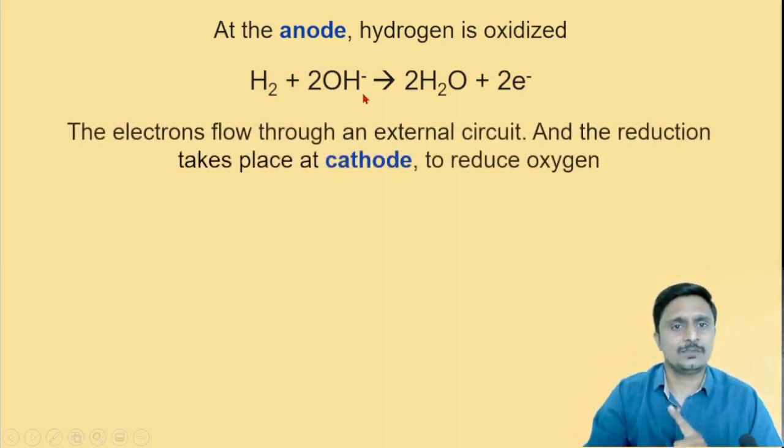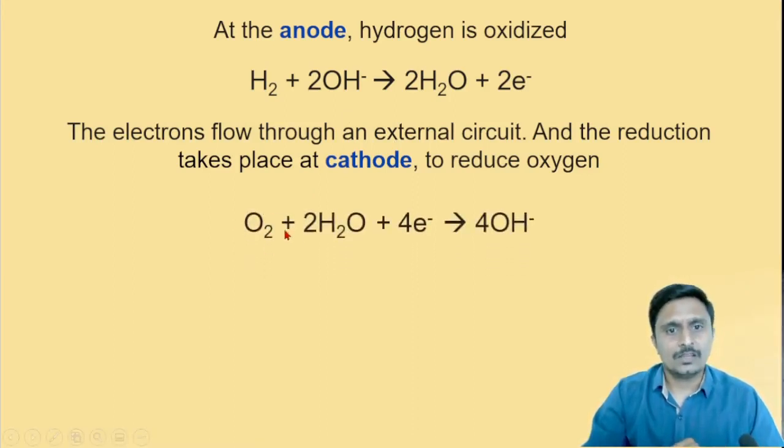The other reaction takes place at the cathode. Why? Because electrons flow through the external circuit towards the cathode, and the reduction at cathode takes place. What reduction is? Oxygen reduction. The reaction we can see is O2 that combines with the water molecule and that accepts the electrons to form the hydroxide ions.